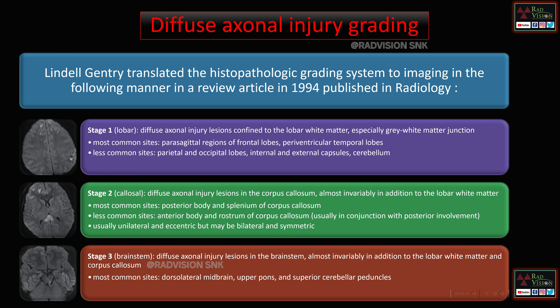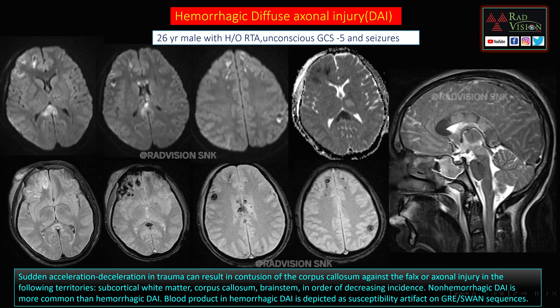Another case: 26-year male with history of RTA, unconscious, GCS 4 and seizures. Restricted diffusion on DWI in the splenium of corpus callosum and subcortical white matter of bilateral frontal lobes with low ADC values, and blooming on GRE within the lesions — a classical case of hemorrhagic DAI. Sagittal sections of the corpus callosum show diffuse edema and injury sparing the genu and rostrum. SWI and GRE/T2-star sequences typically depict hemorrhagic DAI and differentiate it from non-hemorrhagic DAI.